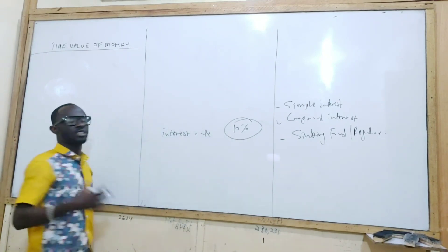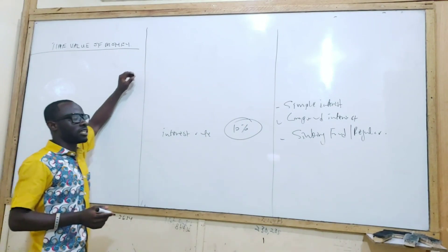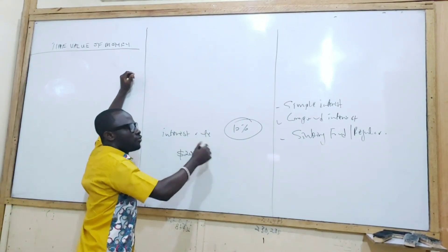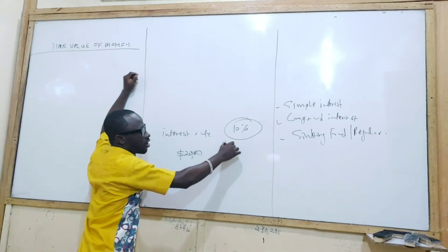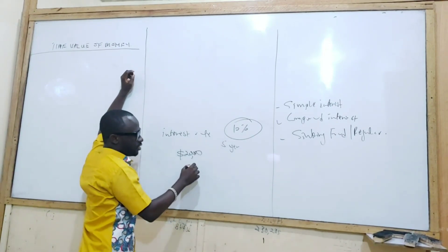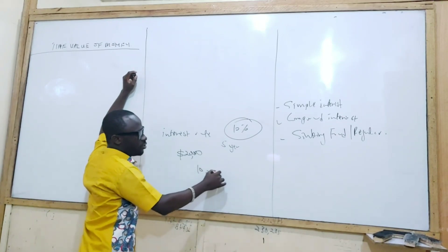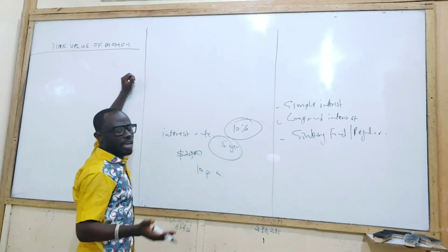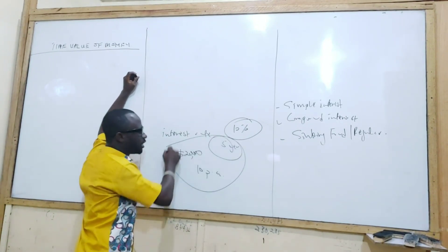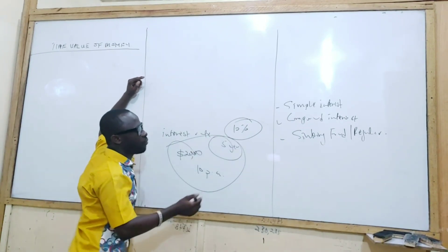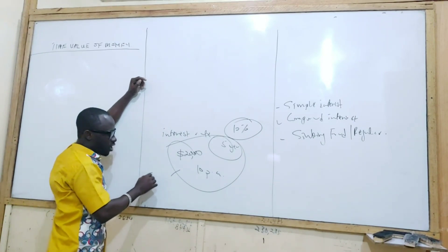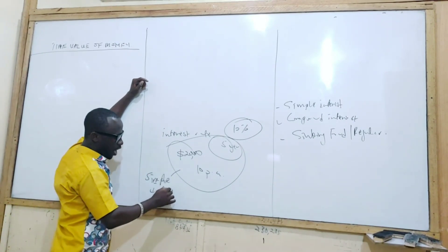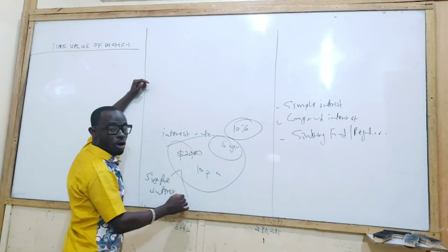For instance, if you have an investment account and you put 20,000 there for 5 years and the interest rate is 10% per annum, the question is: after 5 years, how much money will you get? How much you get will depend on whether we are using simple interest or compound interest.